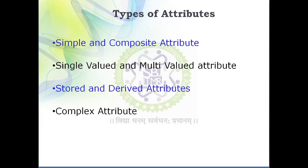Next is attribute. In order to represent a particular entity we require some set of features. For example, a student is represented with the help of its attributes such as roll number, name, contact number, email ID, and address. These features help us to represent that particular entity. So an attribute is nothing but a feature that helps us to represent any particular entity.